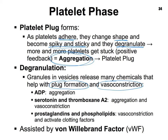The formation of the platelet plug is going to prevent the loss of too much blood. There are many chemicals that play a role in plug formation and vasoconstriction. I've listed some here: ADP (adenosine phosphate), serotonin, and something called thromboxane A2. There are also a variety of prostaglandins and phospholipids that all play a role in either the formation of the platelet plug, vasoconstriction, or even the activation of clotting factors such that the next phase — the clotting phase — can occur.